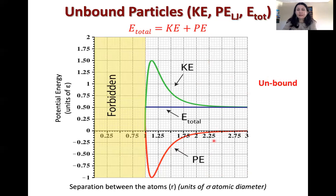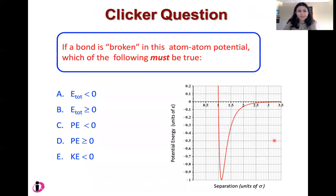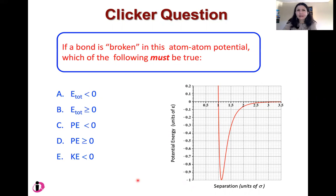A little later — mostly in the next recording — we'll think about how these ideas translate to our definition of bond energy, and what it means when you go through a phase transition to break those bonds. Based on what was just discussed in the two previous slides, if a bond is broken in this atom-atom Lennard-Jones potential, which of the following must be true? Think about these choices and go back if you didn't fully understand what made one pair bound versus the other example unbound.